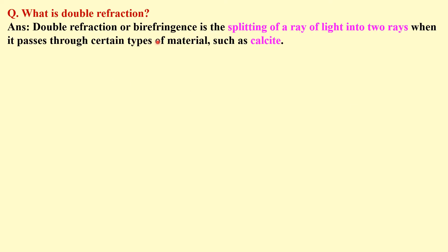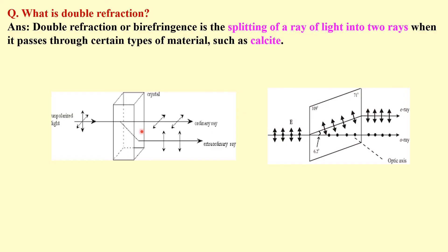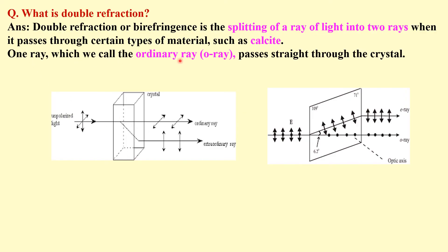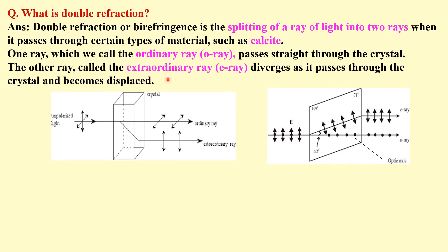What is double refraction? Double refraction (or birefringence) is the splitting of a ray of light into two rays when it passes through certain materials — for example, calcite. One ray, known as the ordinary ray (O-ray), passes straight through the crystal. The other, known as the extraordinary ray (E-ray), diverges from its original path and is displaced, so it is the E-ray.